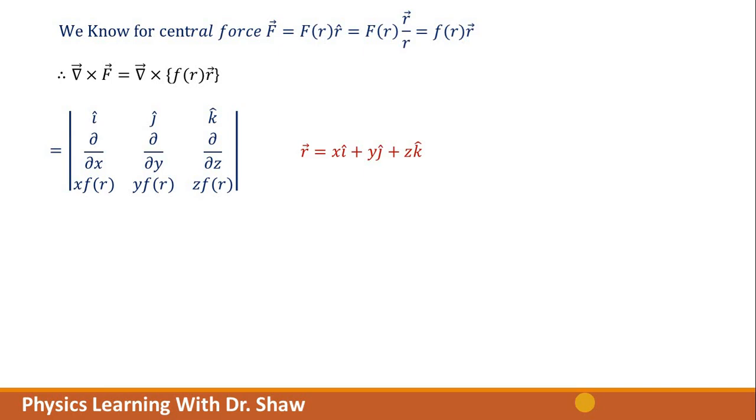As we know, r vector is x i cap plus y j cap plus z k cap, and this small f is a function of r, which is also a scalar quantity. So if you multiply f with r vector, we will have fx i cap plus fy j cap plus fz k cap. Substitute it here and evaluate this determinant.